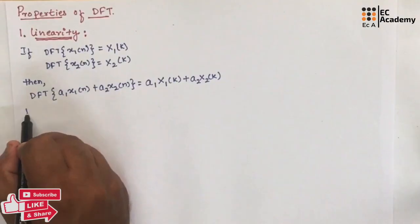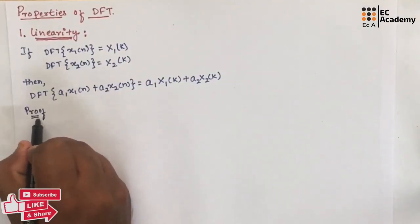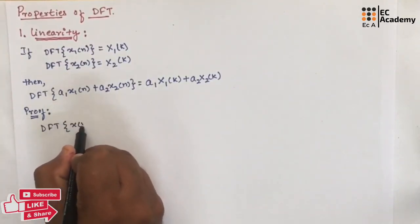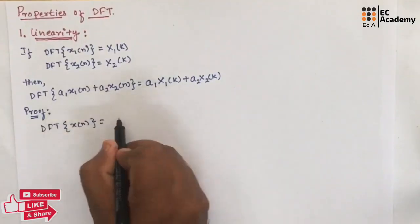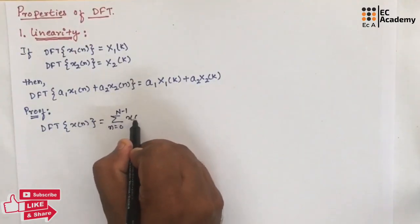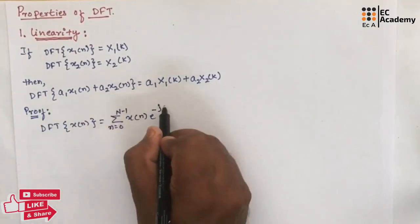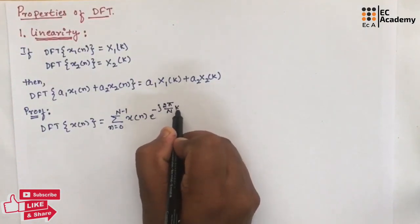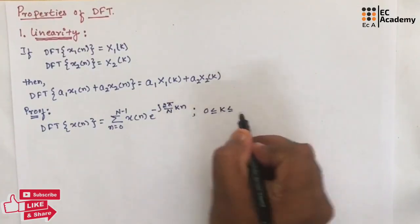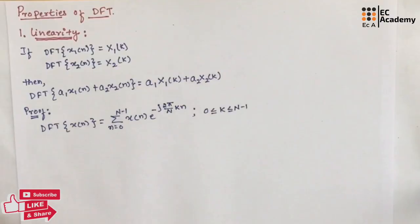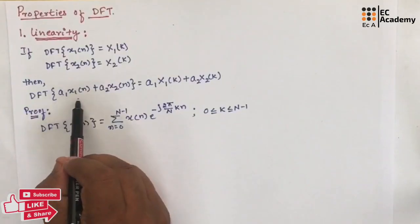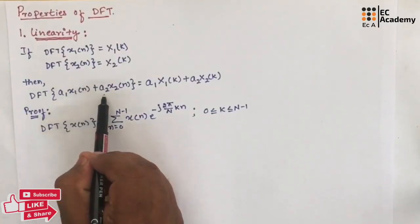Let us prove this. We know the DFT of x(n) can be written as summation from n=0 to N−1 of x(n)·e^(−j2π/N · kn), where the value of k ranges between 0 to N−1. Now, instead of x(n), we will write A1·x1(n) plus A2·x2(n).